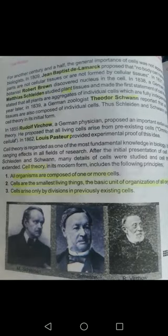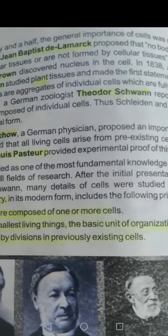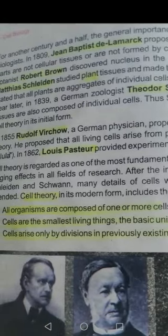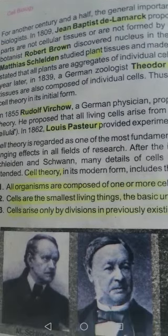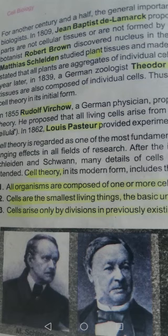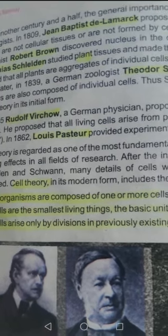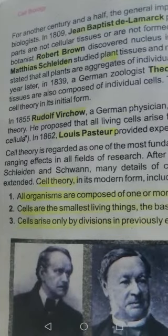The next scientist who contributed was D. Lamarck, a very important scientist. In 1809 he gave the idea that all organisms have tissues in them — he basically gave importance to the concept of tissues. Lamarck was also an evolutionist who gave different theories of evolution, but his contribution to cell theory was highlighting the importance of tissues.